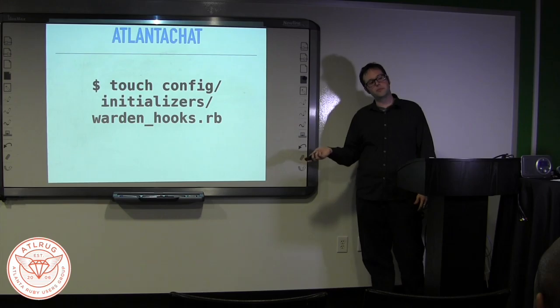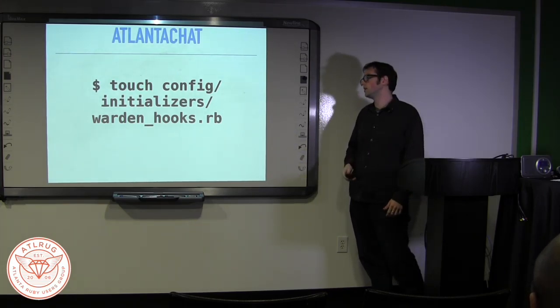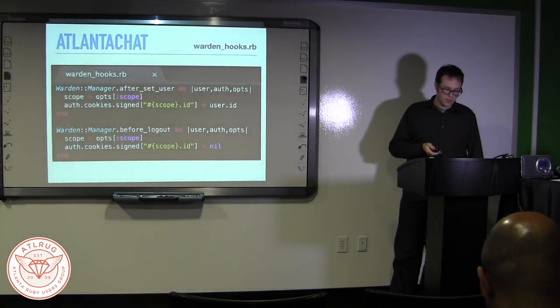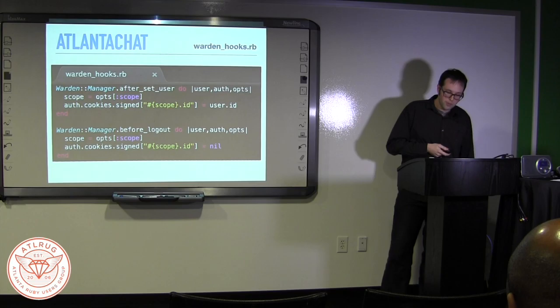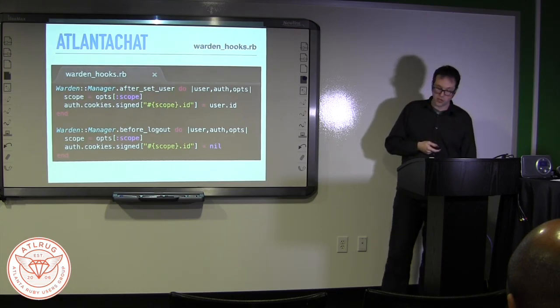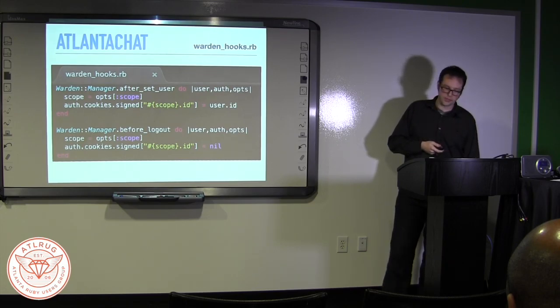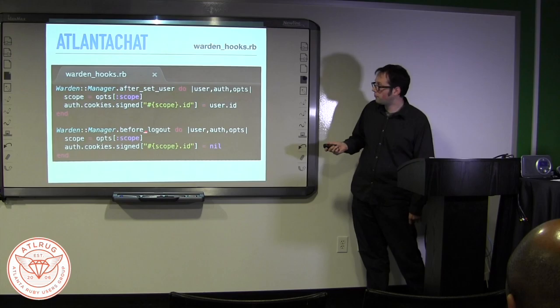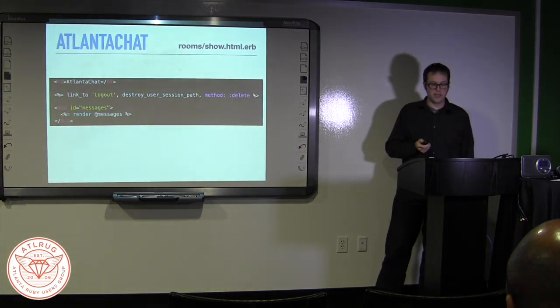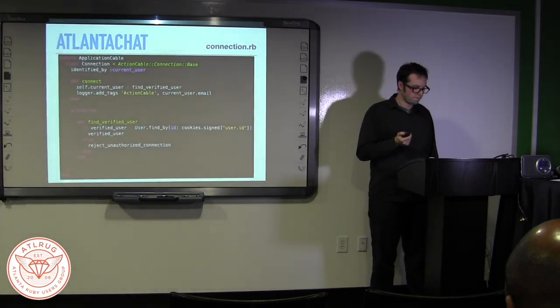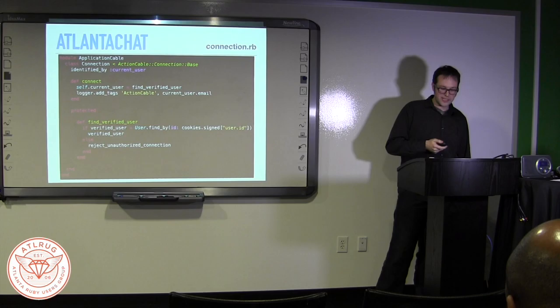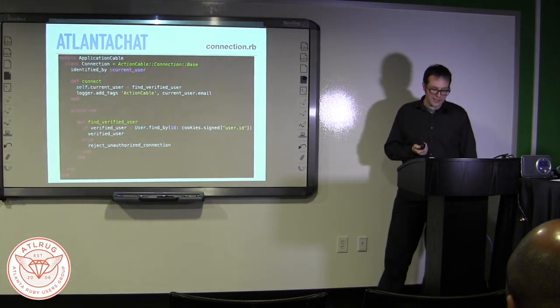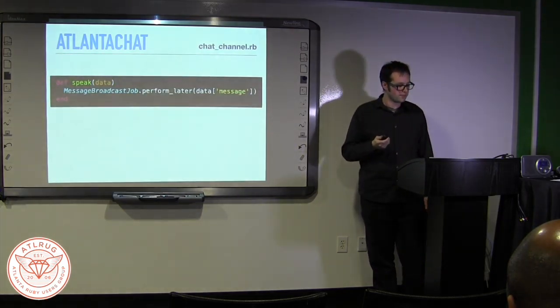So let's create a new initializer for this middleware in our app. And then let's add an after_set_user and a before_logout hook on the Warden manager. Both of these methods contain a user, auth, and option objects. So what we need to do is to set the scope, get the scope, and assign the ID of our logged-in user to our cookies. You notice that we erase that assignment before logout. So we better add a logout link to the show page to give users this option because we haven't done that. Heading back to our connection.rb. That was it. The completed class now looks like this. And it will give us access to a user in our Action Cable server.